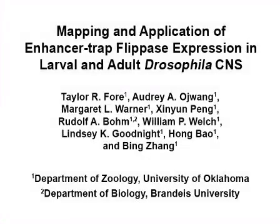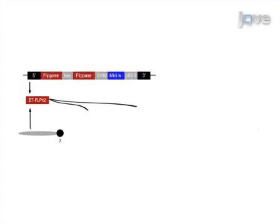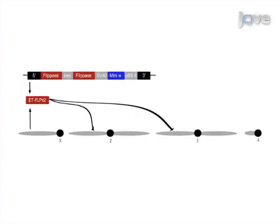The overall goal of the following experiment is to refine GAL4 expression through use of tissue-specific Flippase with GAL80 converting tools. This is achieved by generating a collection of enhancer trap Flippase transgenic fly lines and determining the CNS expression pattern of Flippase in each line using a GFP reporter.